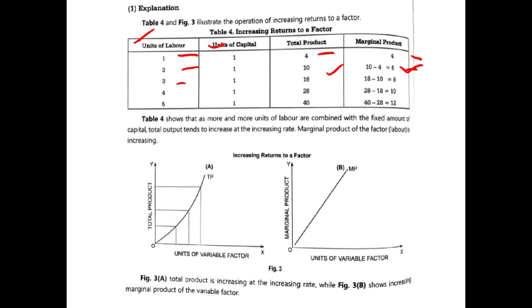With the 4th labor and constant fixed factor, total product is 10 units. With the 5th unit of labor, total product becomes 12 units. That means total product is increasing at an increasing rate, which demonstrates increasing return to a factor.